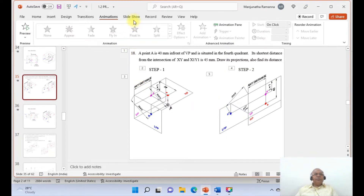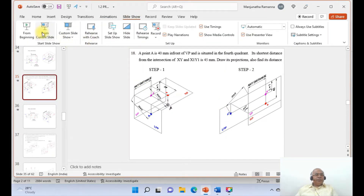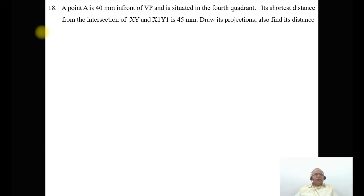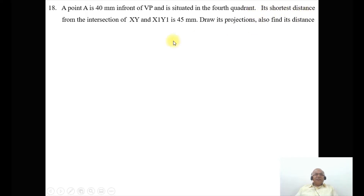In this video we will discuss one more problem on projections of points. Point A is 40 mm in front of VP and is situated in the fourth quadrant. Its shortest distance from the intersection of XY and X1Y1 is 45 mm. We need to draw its projections and also find its distance from HP.